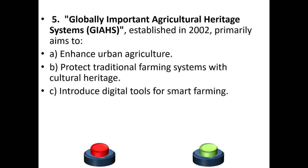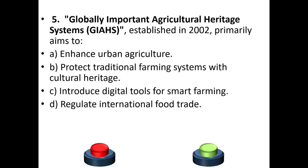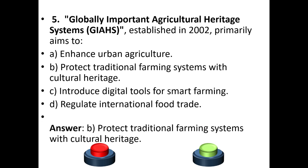Question 5: The Globally Important Agriculture Heritage System (GIAHS), established in 2002, primarily aims to: a) enhance urban agriculture, b) protect traditional farming systems with cultural heritage, c) introduce digital tools for smart farming, or d) regulate international food trade. The answer is option B — protect traditional farming systems with cultural heritage.